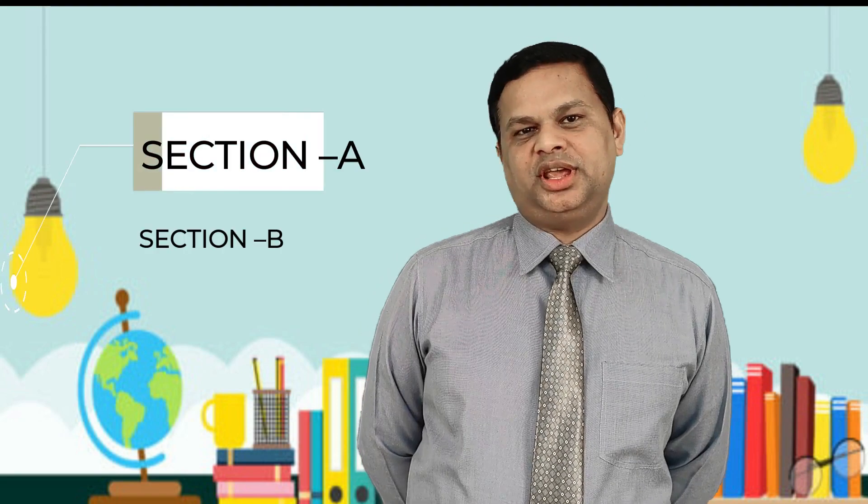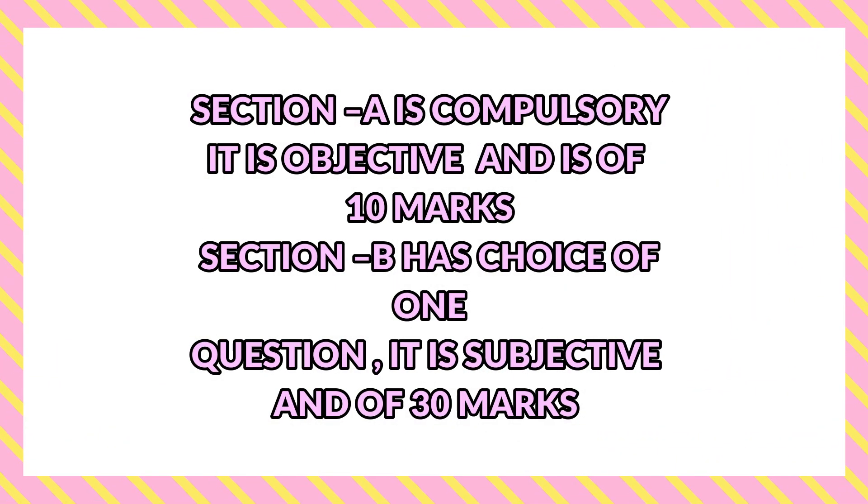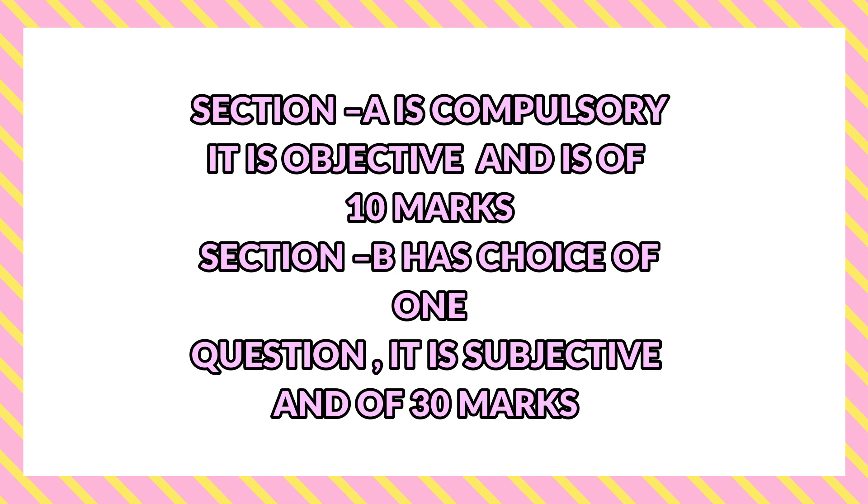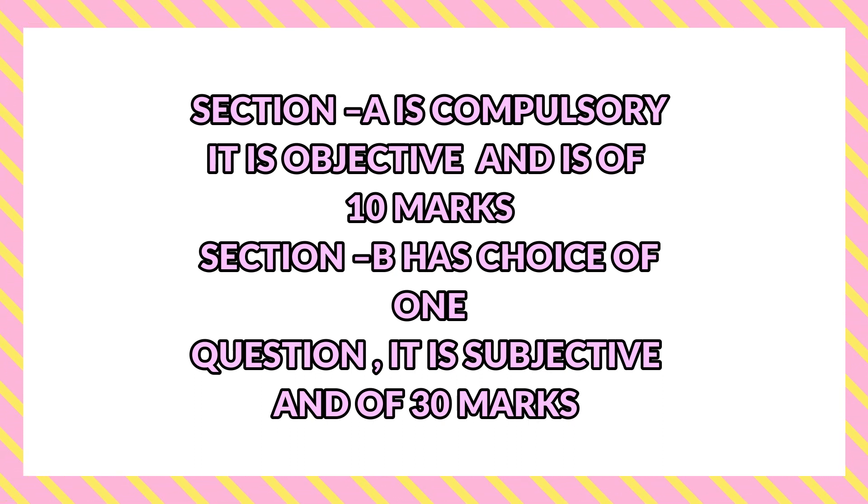As per the specimen paper released by the council, the physics paper has been divided into two sections — Section A and Section B. Section A is compulsory and in Section B there is a choice. Out of four questions, you have to do any three. Section A is of 10 marks which is objective and Section B is of 30 marks which is subjective. The paper has been designed in such a way that it covers all the topics mentioned in the semester two syllabus.